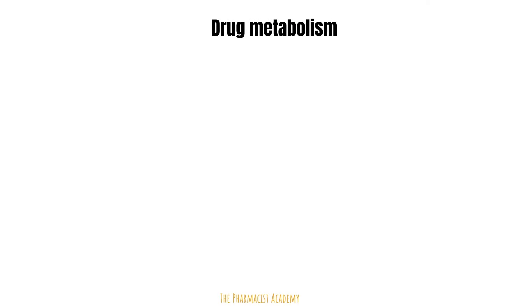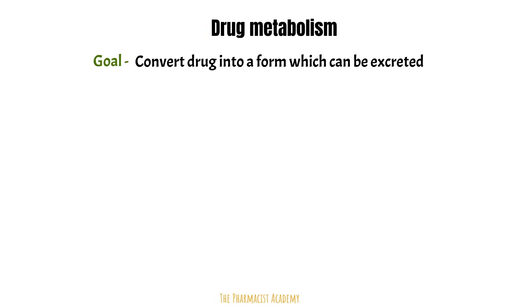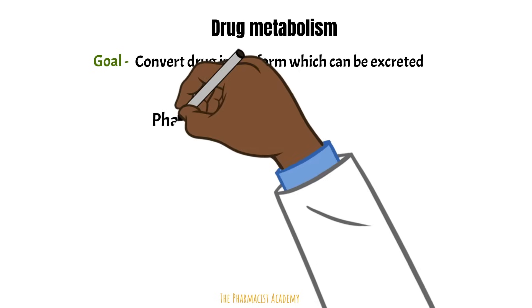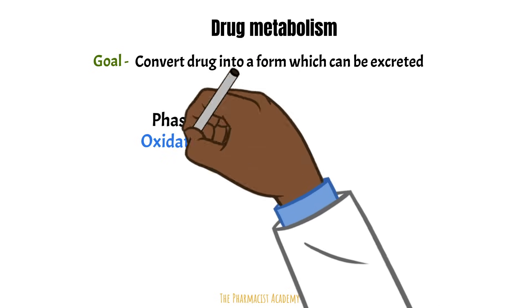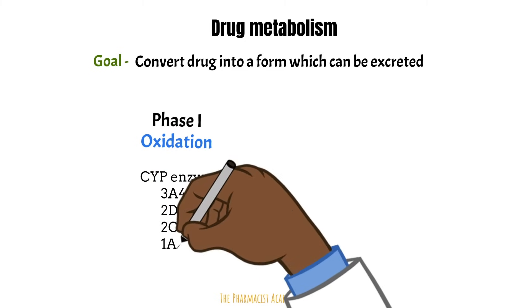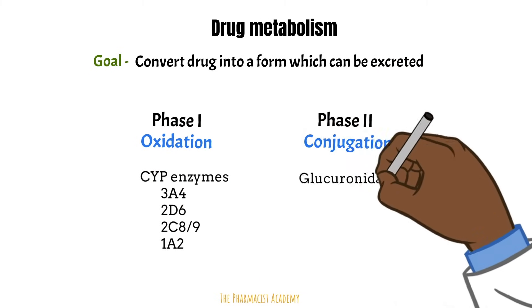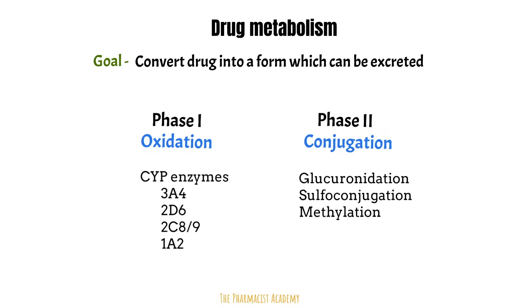Now the original forms of drugs are usually not able to be cleared by the body, so the body must find a way to fix this. It does this by converting it into a more familiar form so that it can be excreted. It uses two methods: phase one, which is oxidation or removing electrons from the compound so it becomes charged and more water-soluble, catalyzed by the CYP enzymes; and phase two, which involves conjugation, which will further increase the compound's water solubility by attaching a group to it.